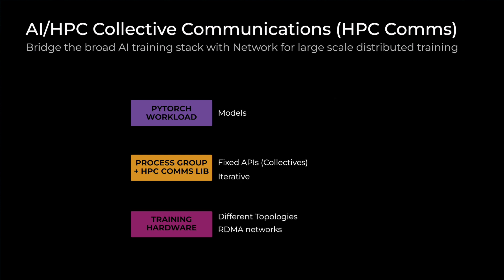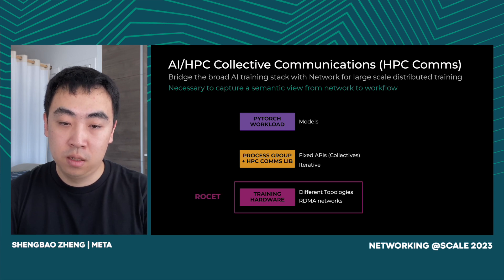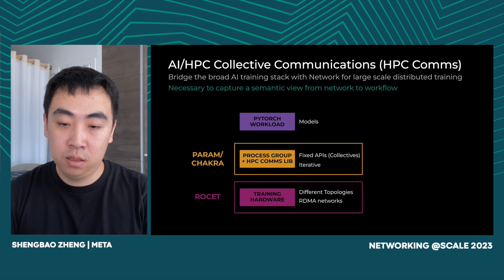At the very bottom of the training stack are different types of training hardware connected with different co-designed AI zone topologies through RDMA networks. To better understand a training job, it is necessary to capture a semantic view from network to workflow. In this talk, I will introduce ROCKIT to provide observability over RDMA networks, and introduce PARAM and CHAKRA to understand collective communication behaviors.